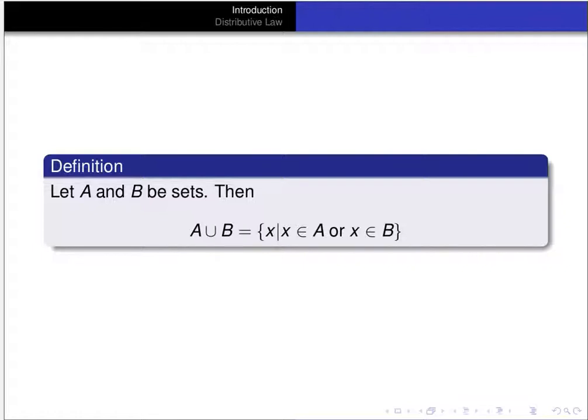Let A and B be sets. The union of A and B, A∪B, is the set of all x such that x is in A or x is in B. The intersection of A and B is the set of all x such that x is in A and x is in B.